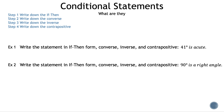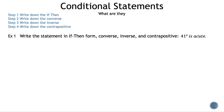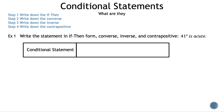Now let's take a look at some math examples. Example one: write the statement in if-then form, converse, inverse, and contrapositive, where the statement is '41 degrees is acute.' Let's begin our table with the conditional statement in if-then form. If the measure of angle A is 41 degrees, then angle A is acute.